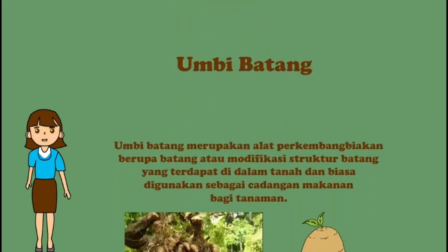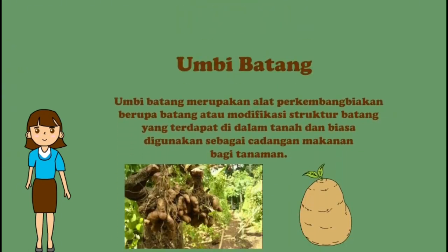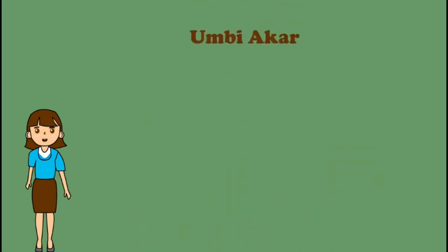Yang kelima, umbi batang. Umbi batang merupakan alat perkembangbiakan berupa batang atau modifikasi struktur batang yang terdapat di dalam tanah, dan biasa digunakan sebagai cadangan makanan bagi tanaman. Saat ditanam di tanah, umbi ini bisa tumbuh menjadi tanaman baru. Contoh tumbuhan yang berkembang biak dengan umbi batang adalah kentang, ubi jalar, talas, bengkuang, gadung, dan gembili.